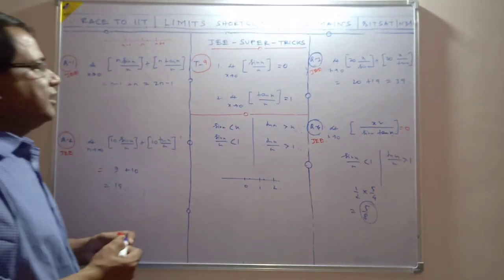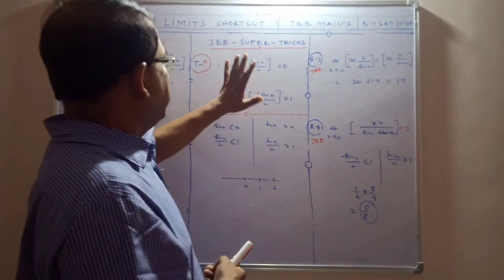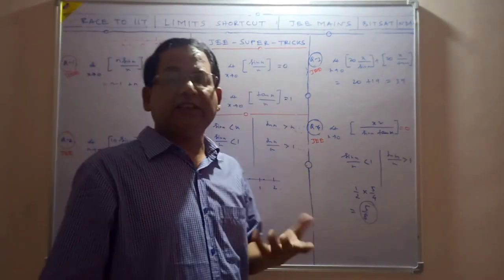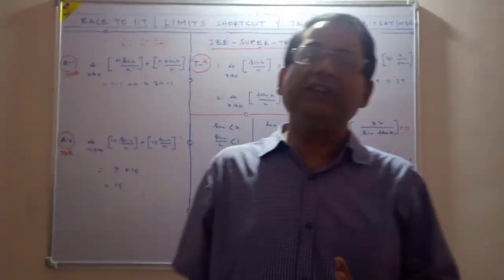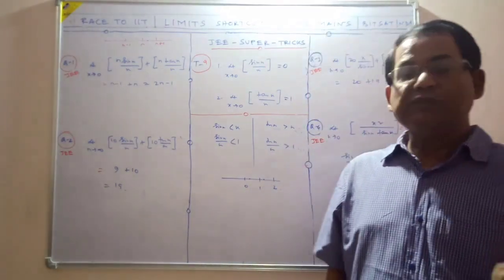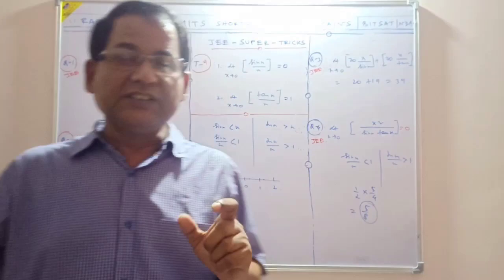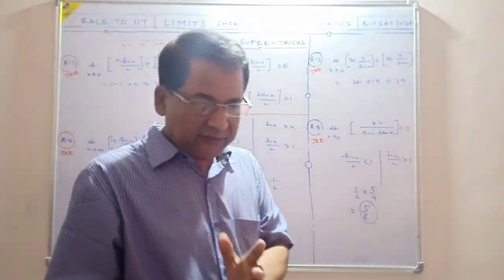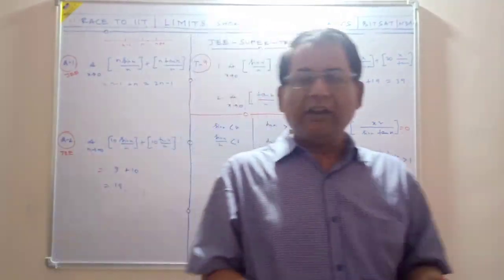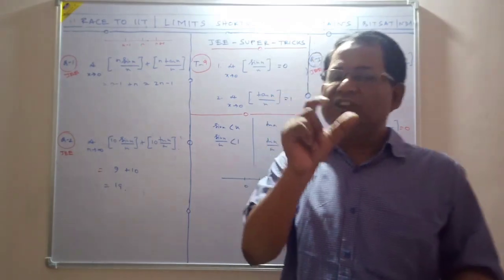So the trick here: sin x/x greatest integer function's limiting value is zero, and tan x/x greatest integer function's limiting value is one. Remember this.